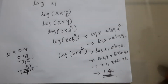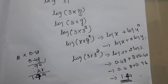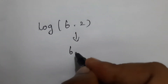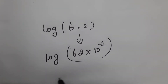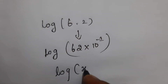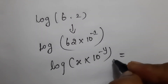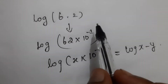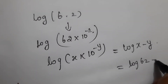Now let's take another example: log(6.2). First, we rewrite 6.2 as 62 × 10^(−1). We have the format log(x × 10^(−y)) = log x − y, where y = 1 and x = 62. So this becomes log(62) − 1.